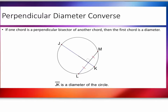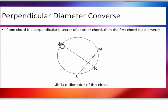There's a converse of the perpendicular diameter theorem. If one chord is the perpendicular bisector of another chord, then the first chord is a diameter. So if you have a chord that bisects another chord into equal segments and is perpendicular to it, you automatically know that chord must be the diameter of the circle. The previous theorem said: if this is the diameter and it's perpendicular to a chord, it bisects it. The converse says: if a chord perpendicularly bisects another chord, it's automatically the diameter.